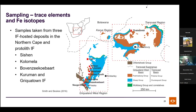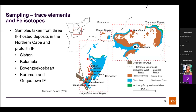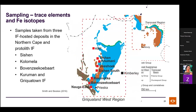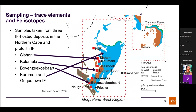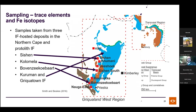The second study covers trace elements and iron isotope work, based partly on samples from previous MScs. In collaboration with Stéphane Lalonde, more detailed micro-drilling was applied. Samples are focused on Sishin, Colomela, and Boven-Seekwibart, plus pristine Kuruman and Griquatan iron formation reference samples drilled near the town of Kuruman.